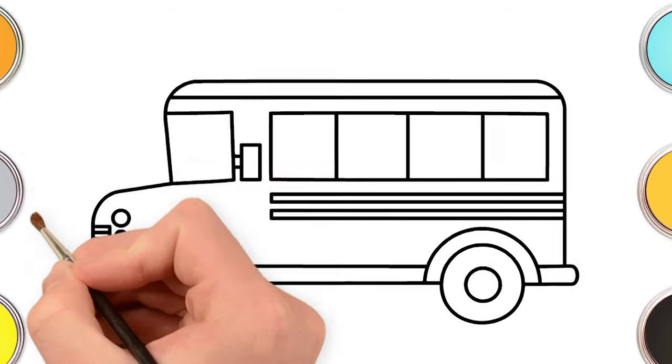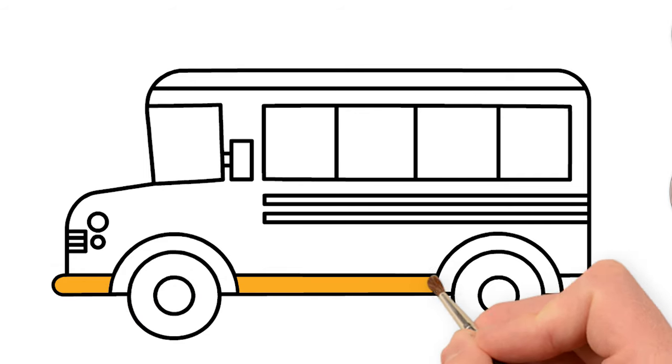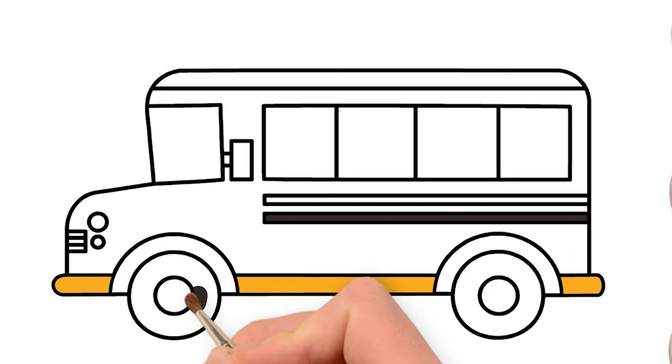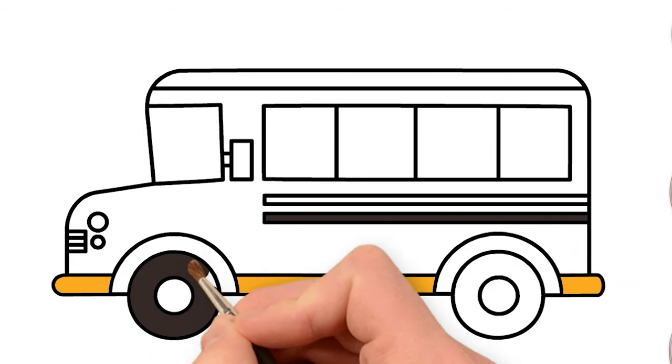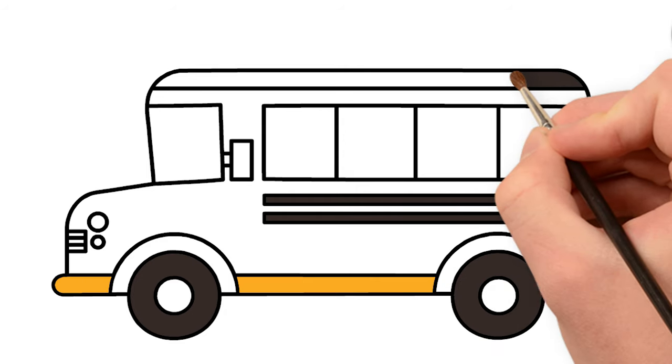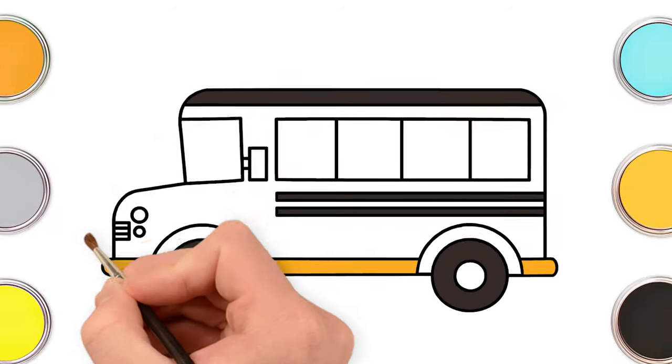Let's paint the bus with bright colors. Use orange to paint the bottom of the bus and black for the lines on the bus, the wheels, and the top of the bus. Wasn't that easy?